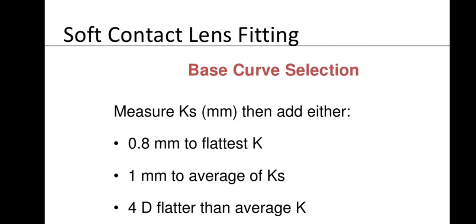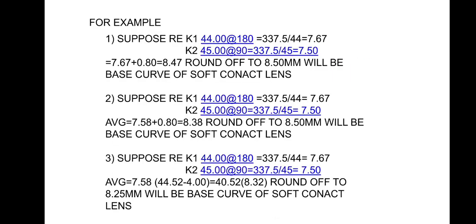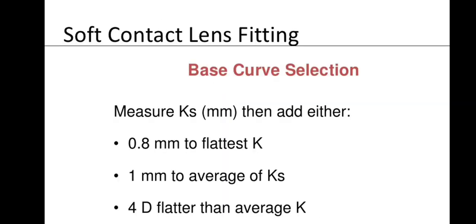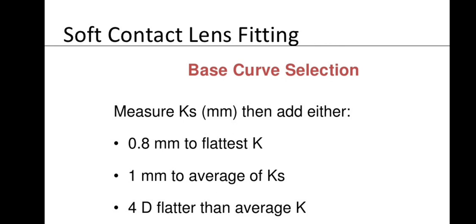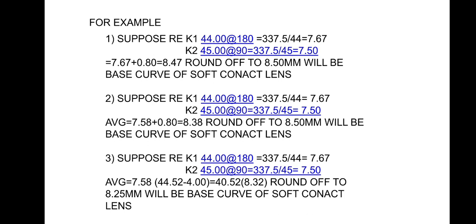For the third method — 4 diopters flatter than average K — the average in millimeters is 7.58 mm, which converts to 337.5 ÷ 7.58 = 44.52D. Subtracting 4 diopters gives 40.52D, which converts back to approximately 8.32 mm, rounded to 8.25 mm. The difference between all three methods is small, about 0.25 mm.